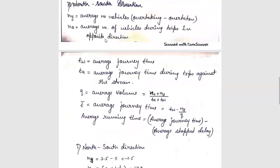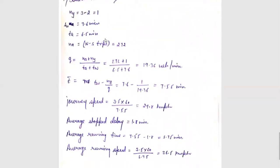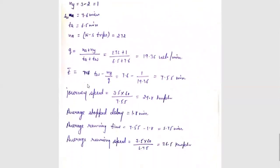Now for the south-to-north direction. NY = 1, TW = 7.6 minutes, TA = 6.5 minutes, NA = 272. Substituting into the formula Q = (NA + NY) / (TA + TW), the average volume Q = 19.36 vehicles per minute.